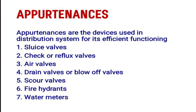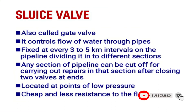The seven appurtenances are: sluice valves, check valves or reflex valves, air valves, drain valves or blow-off valves, scour valves, fire hydrants, and finally water meters. We can look at those one by one, starting with sluice valves.